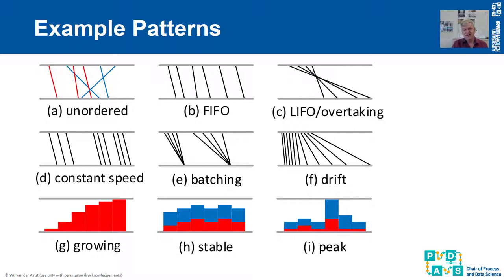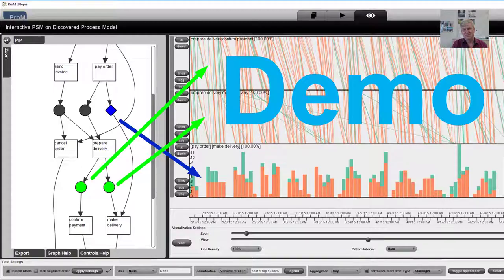If lines are parallel, speed is constant. If lines are not parallel, speed is varying. If lines start or end in the same point, we can see that there is batching. If patterns change over time, we know that there is drift. And we can see all kinds of trends — for example that the workload is growing, that the workload is stable, or that there are certain peaks at particular times in the day. Performance spectra can show all of these different phenomena.